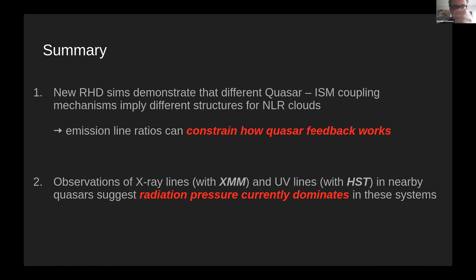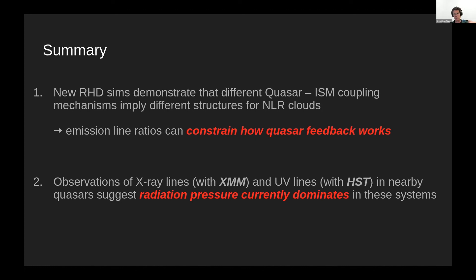Question from the chair: apart from comparison of line ratios, are there other ways to directly probe whether radiation pressure is the dominant feedback mechanism — what other independent observational constraints could you think of? Response: one approach is by measuring the momentum in the outflows. Different feedback mechanisms have different limits on how much momentum they can produce, so that would be another way to constrain the mechanism. You can essentially compare the results from emission line ratios with the momentum measurements.